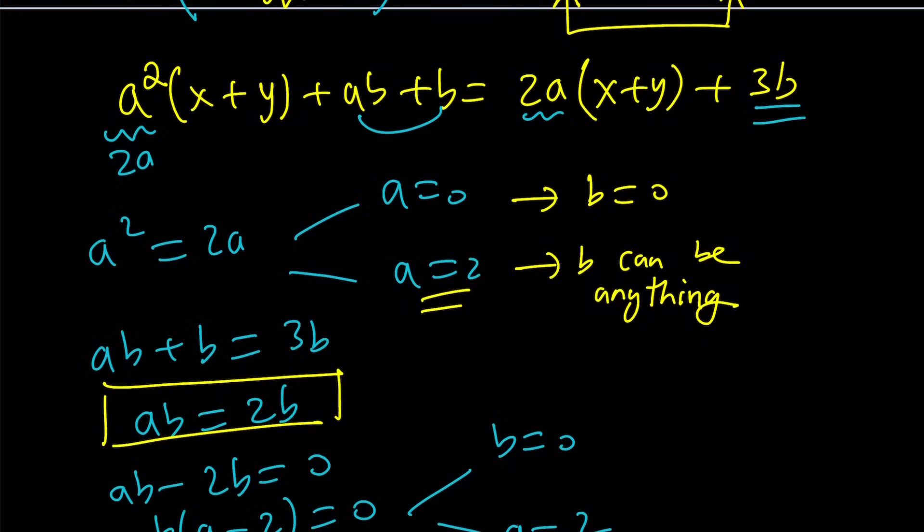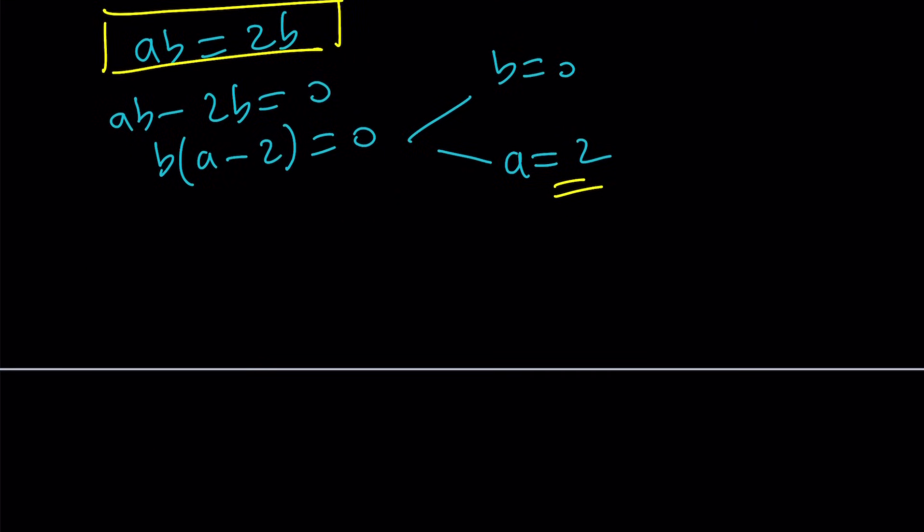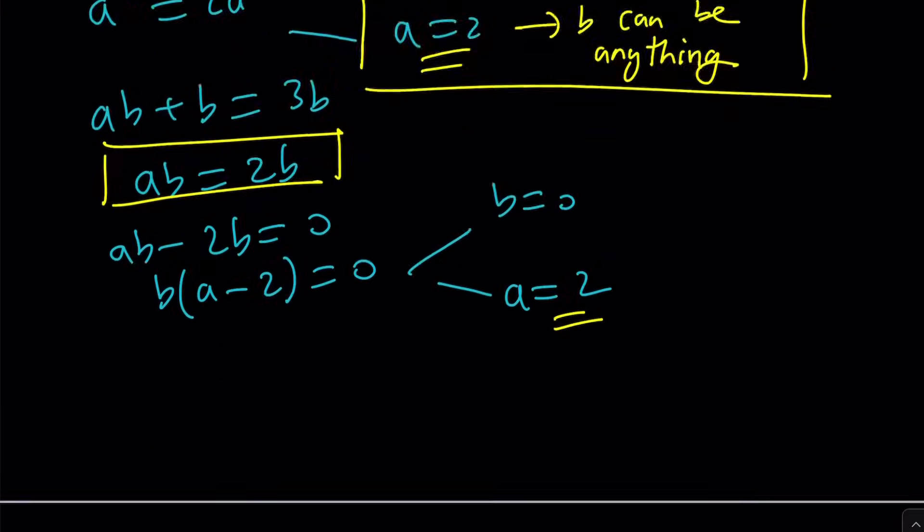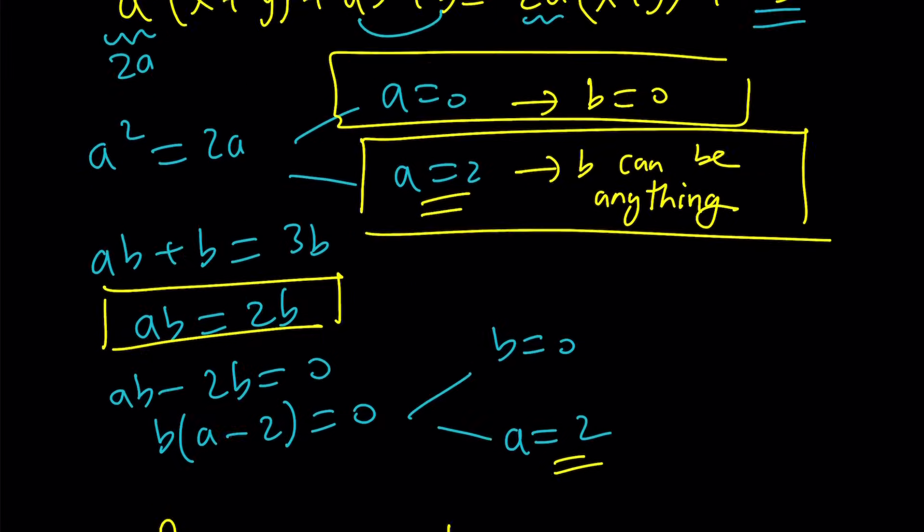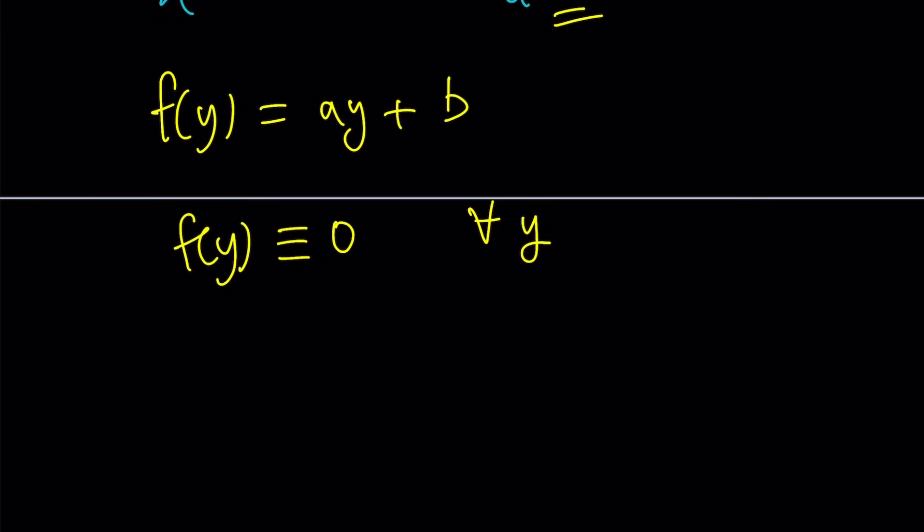So we kind of got two solutions here. Let's write them down in terms of our function. We said that our function is linear. And then if a is 0, b is 0. So that means f(y) is going to be 0. But this is identically 0 for all values of y. Of course, you can also write this as f(x) = 0.